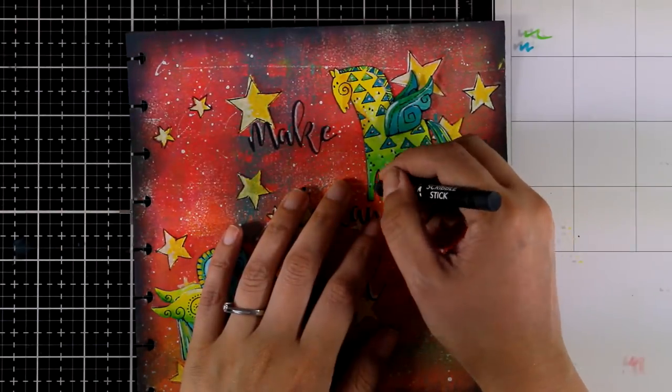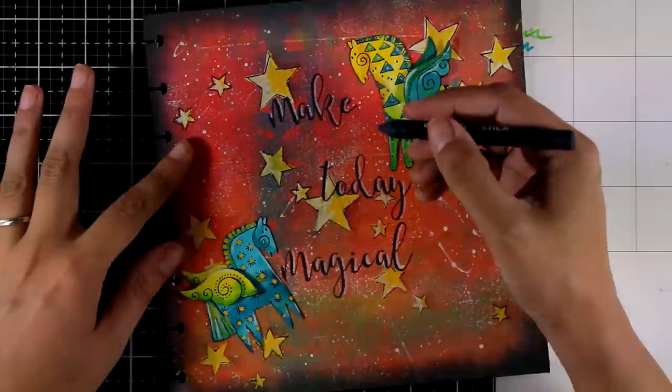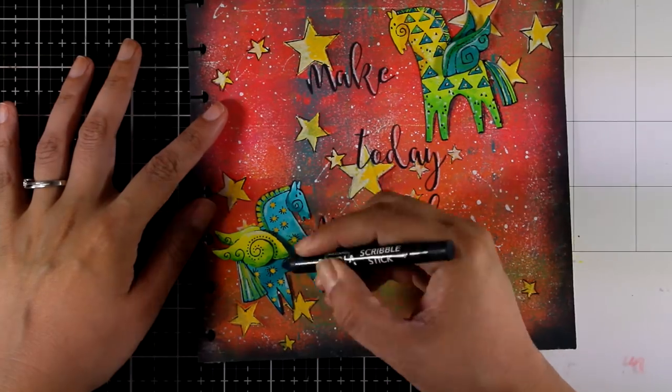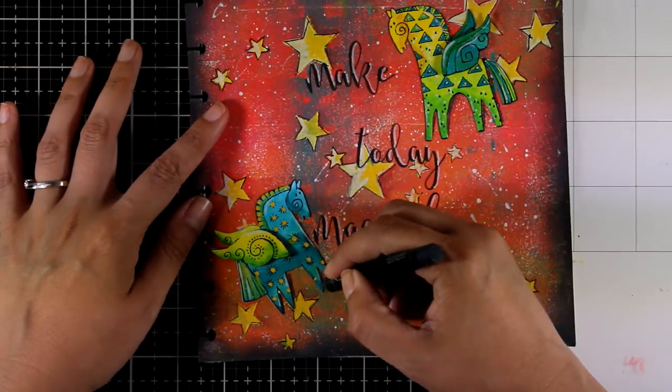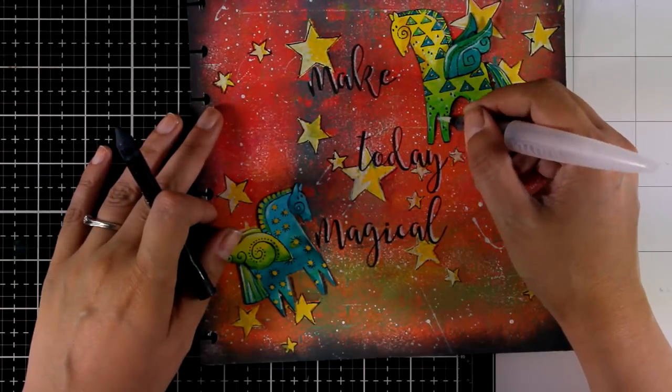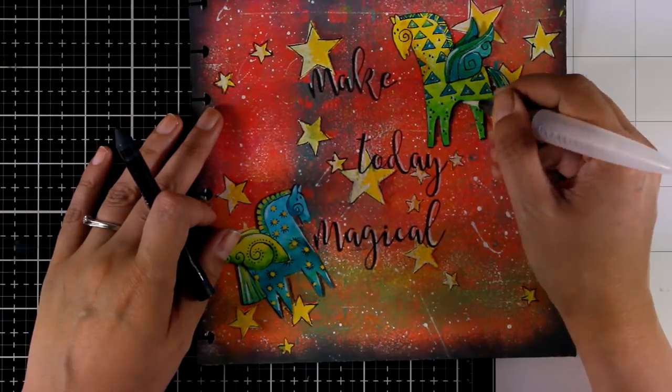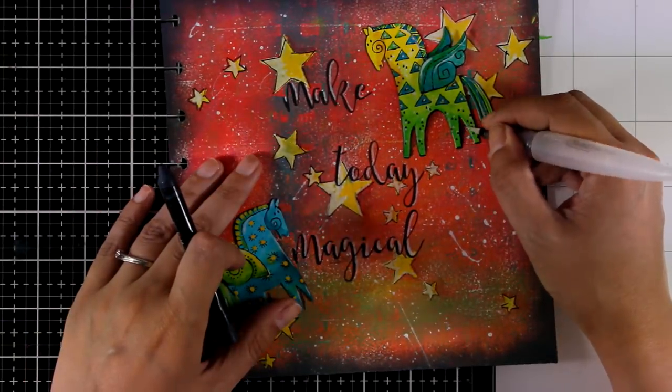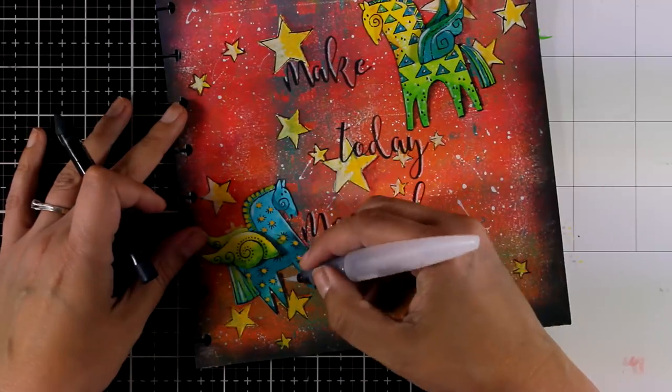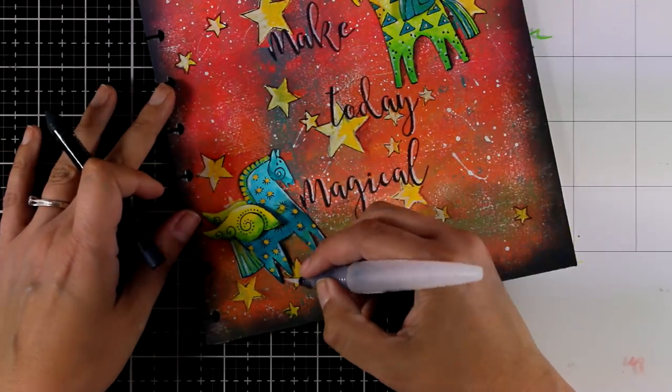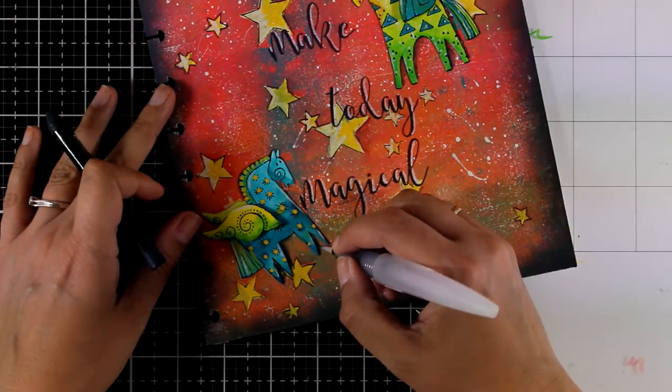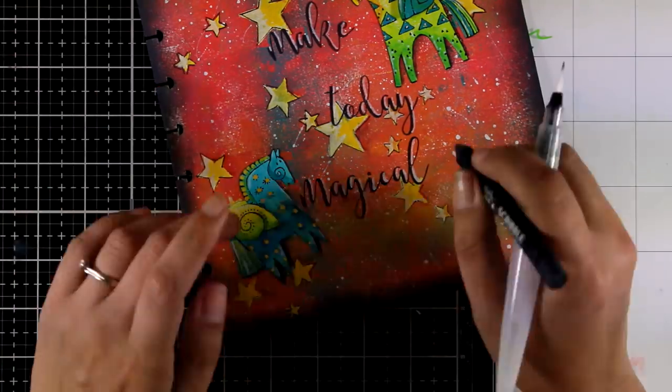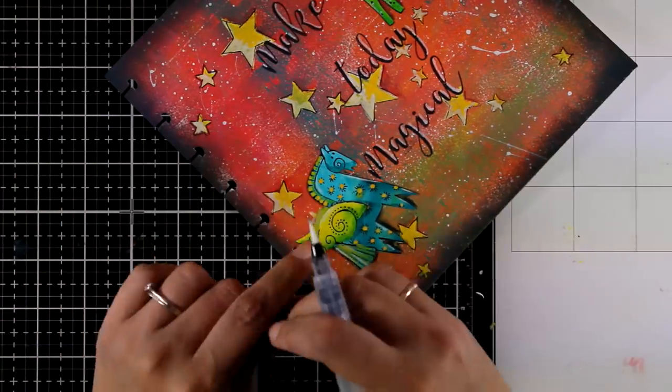I'm going to show you a really easy shadowing technique that you can do. I'm using the Scribble Sticks and I'm going to apply some color around my horses, just only in areas that I need to deepen up the shadows there. Now with a wet paint brush I'm going over that color which is going to help it spread out and it's going to create those shadows. This really helps the horses to stand out against the background.